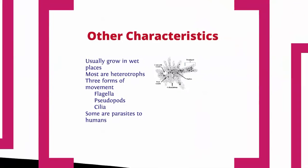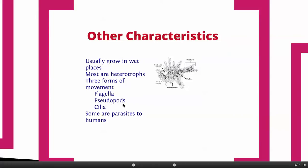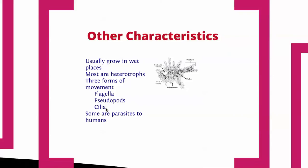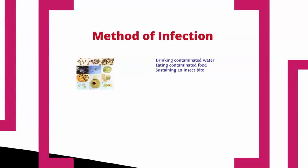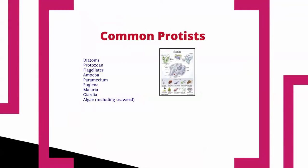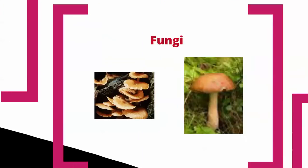Protists usually grow in wet places. Most are heterotrophs. They have three different forms of movement: a flagella, which is like a tail; a pseudopod or false foot, where part of the cytoplasm stretches out and pulls the rest of the cell along; and cilia, which are like little hairs around the outside of the cell that flap and wave to push it along. Some protists are parasites to humans. Infection usually comes from drinking contaminated water, sometimes contaminated food, or rarely from an insect bite. Common examples include diatoms, protozoans, flagellates, amoeba, paramecium, euglena, and algae like seaweed.